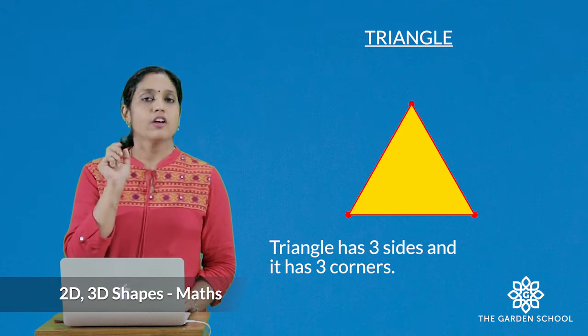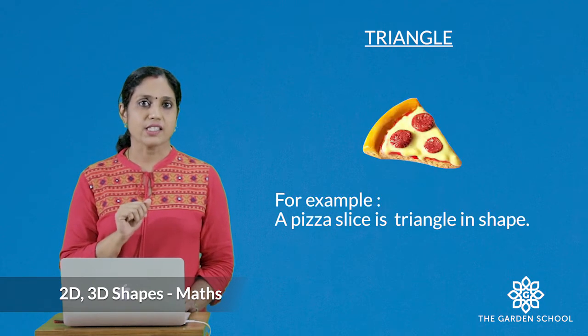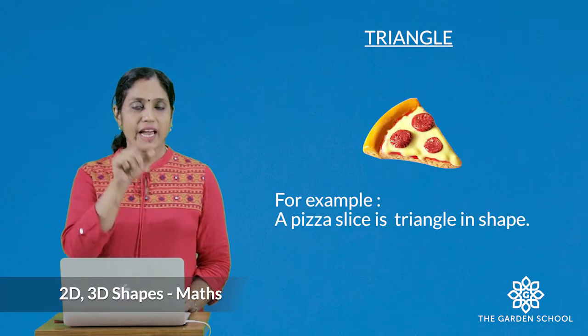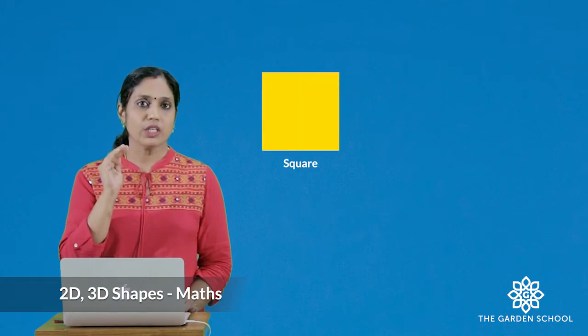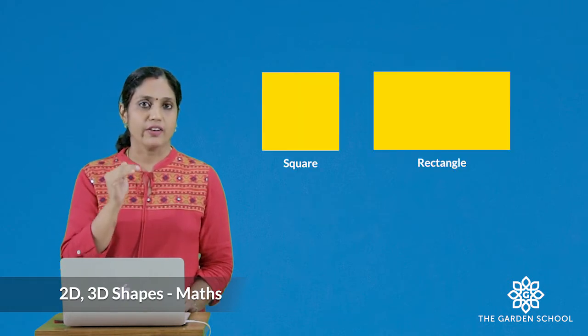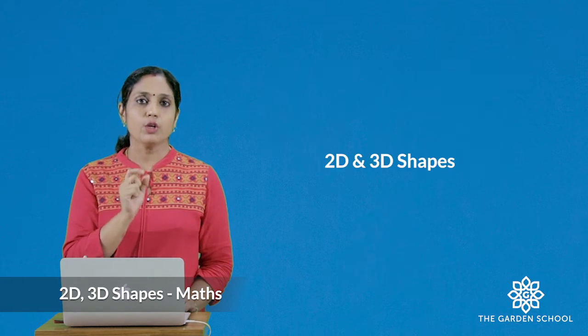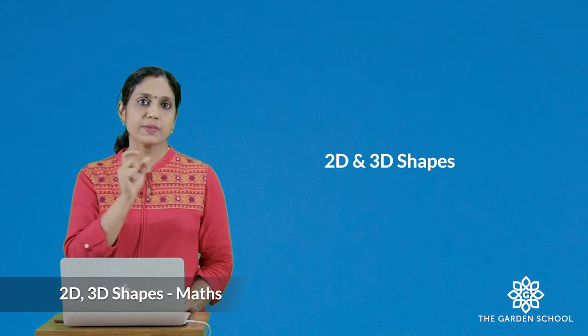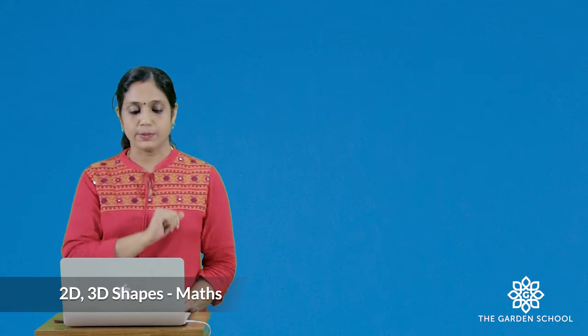Let's move on to triangle. Triangle has three sides and it has three corners. For example, a pizza slice is triangle in shape. Now we have learned about square, rectangle, and triangle. Now let's learn about 2D shapes and 3D shapes — I'll show a picture of a house.